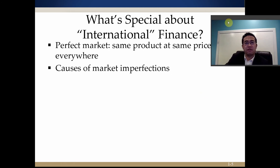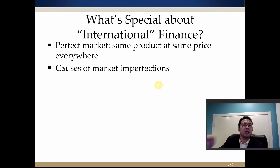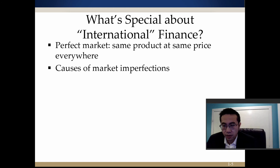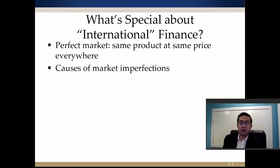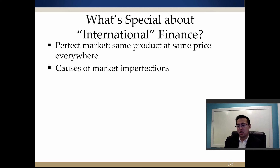Another topic of international finance is market friction. We need to first understand what a perfect market is — it basically refers to the same product priced at the same level everywhere. For example, if you buy our textbook in Chicago, it's the same dollar amount as in New York or Las Vegas. So within the United States, one particular textbook has a perfect market. But that's not the same case internationally — the same textbook issued in Europe or Asian countries is cheaper than in the US. So should we do import/export in this regard?